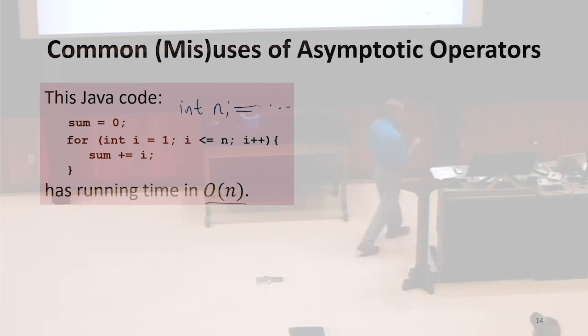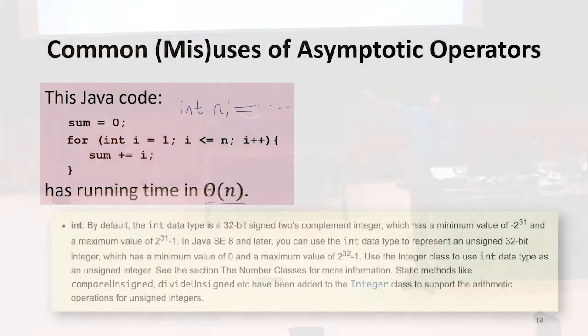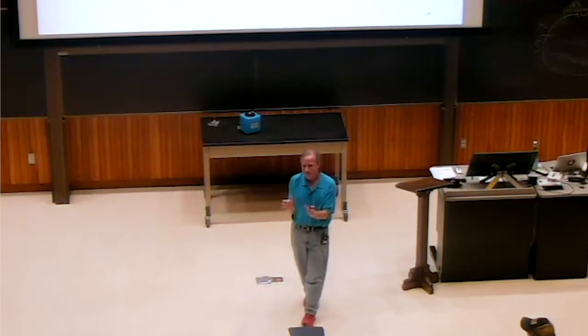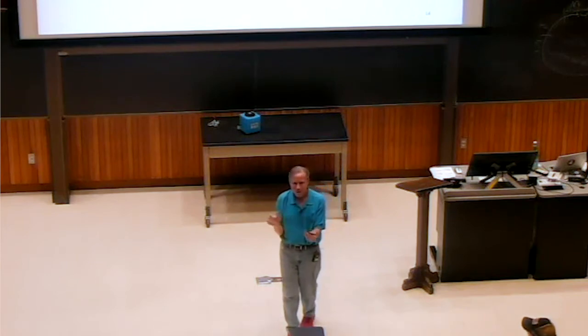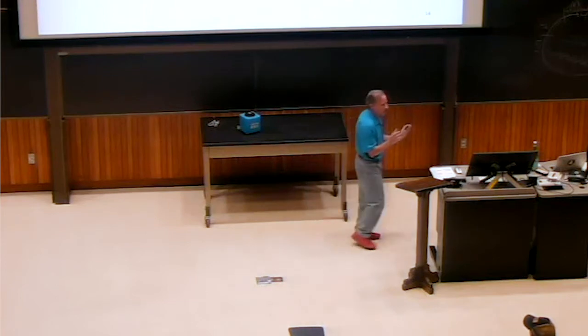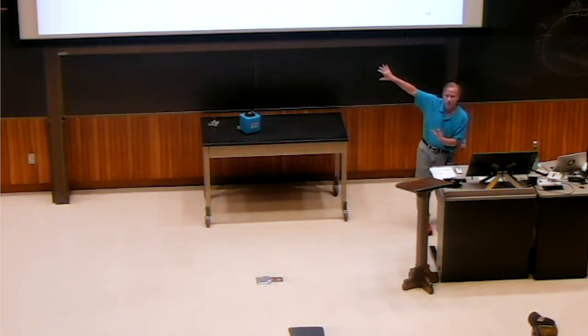So the int type has a maximum. It's actually a small maximum, right? It's only 32 bits. It's a couple million. So the real running time of this based on that maximum integer is constant. It does not scale asymptotically. We know it's the maximum total running time. There's some constant.